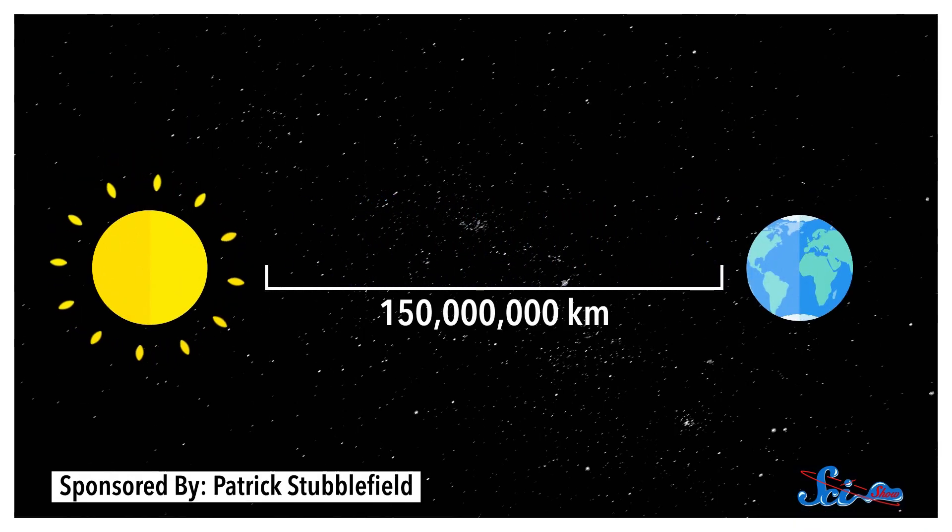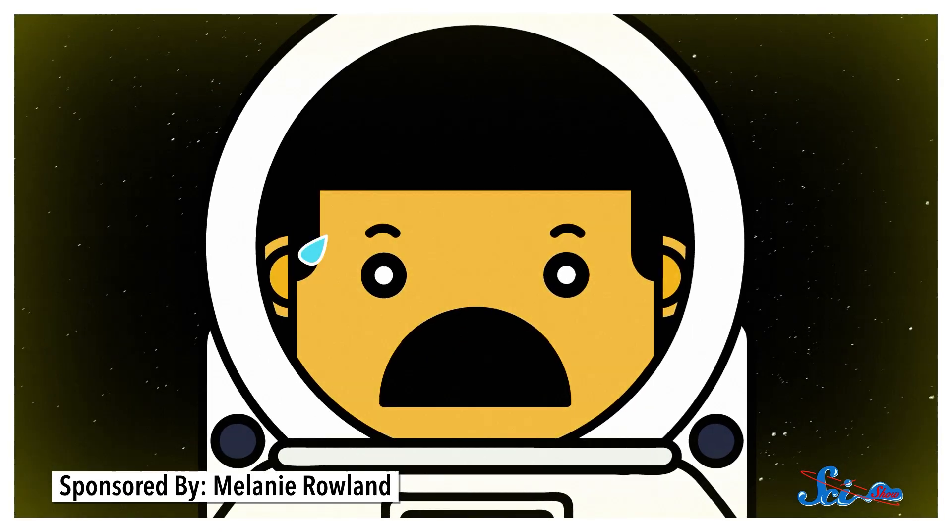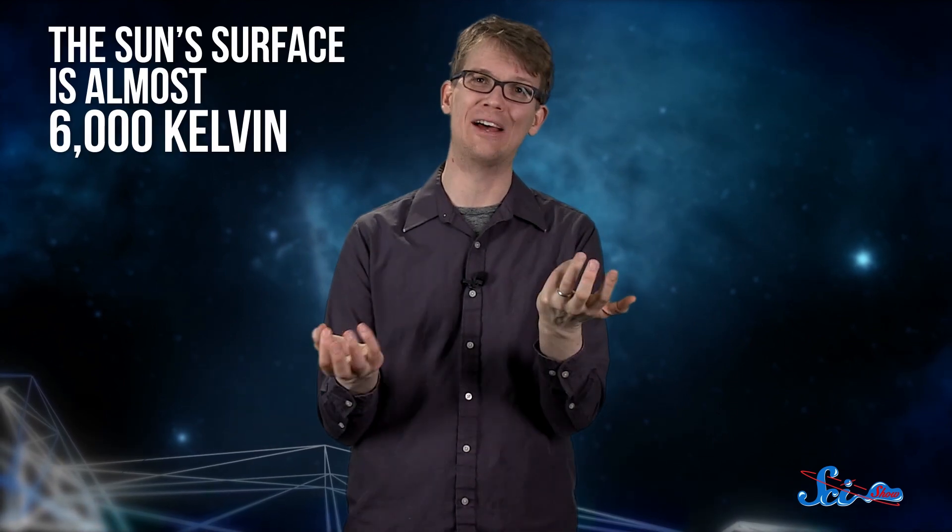That's when the suit would go from being a life-sustaining pocket of the universe just for you, to a kind of personal pressure cooker. That's just 6.8 million kilometers from the surface of the sun, which is pretty close. Especially considering that the sun's surface is almost 6,000 Kelvin.